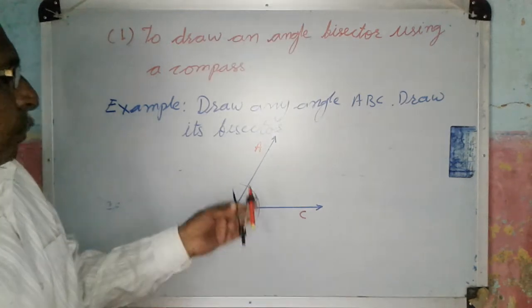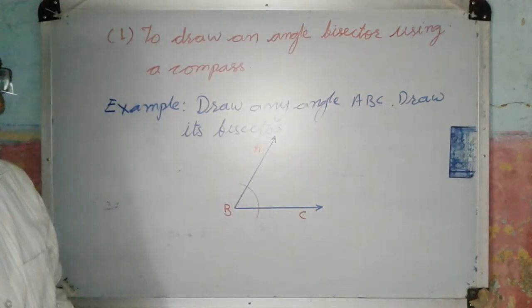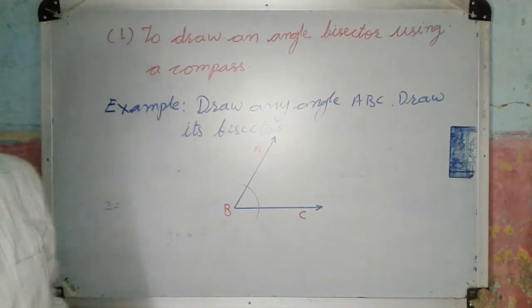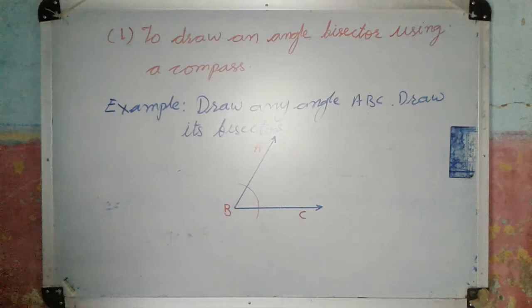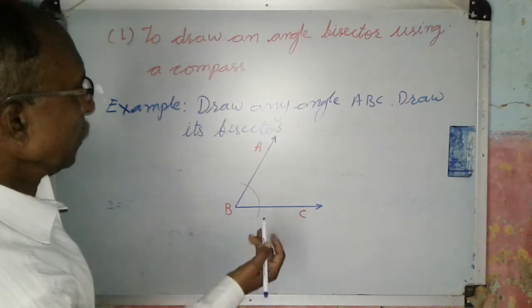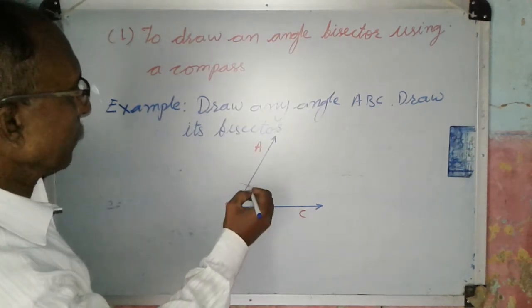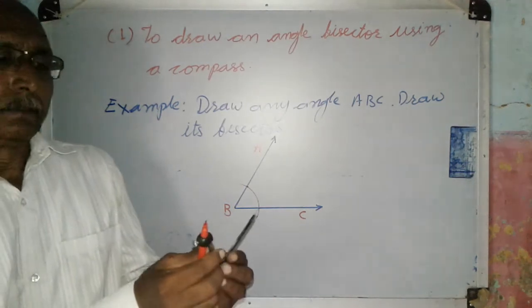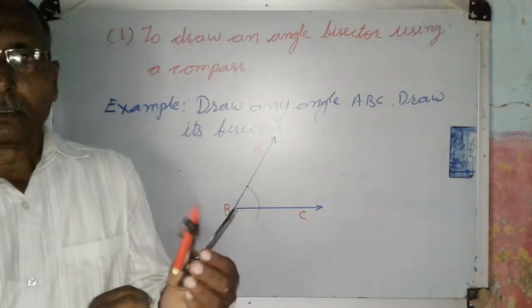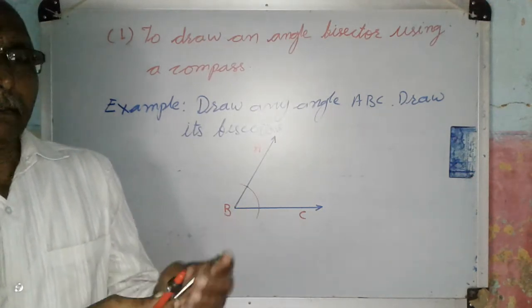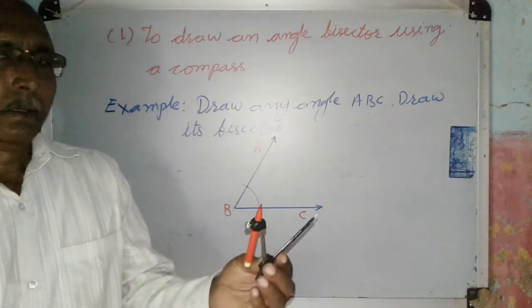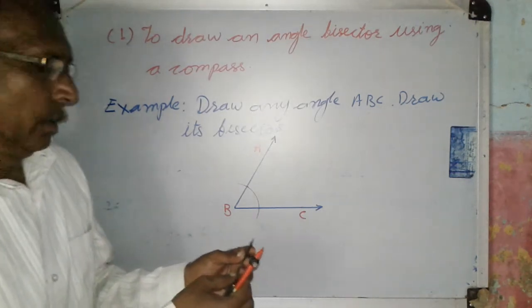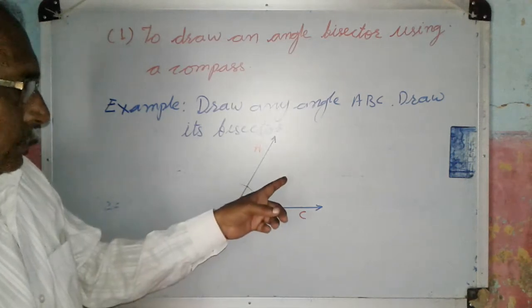Draw an arc which cuts both the arms of this angle. Now we have two points of intersection, one on each arm. Change the compass distance to a suitable fixed distance. Again, draw two arcs inside this angle.